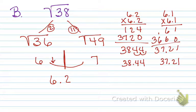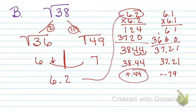Well, this is lower. And let's see how much different. Well, this is only .44 more. But this is .79 less. So this one is actually closer. So because we use 6.2, 6.2 is our best estimate of the square root of 38. Alright, let's go on to C.